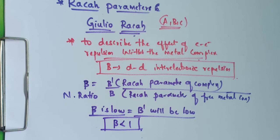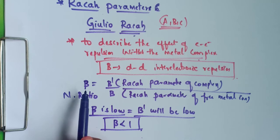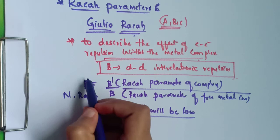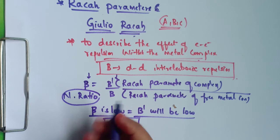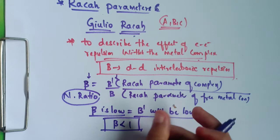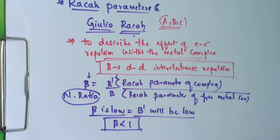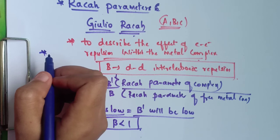Beta and B' are directly proportional, so if beta is low, B' will also be low. The nephloxetic ratio (β) is the ratio of the Racah parameter of the complex to that of the free metal ion.